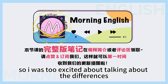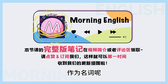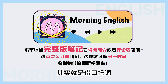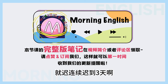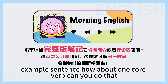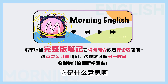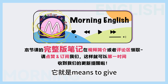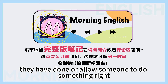I was so excited about talking about the differences, I forgot to ask if you know what the noun 'excuse' means. 那我当然得知道,对不对?作为名词呢,它是比较好理解的,其实就是借口、托词。Like, 'There's no excuse for being late three days in a row.' 就连续迟到三天,你是没有什么借口的,说不过去的。As for the verb, it means to forgive somebody for something that they have done, or to allow someone to do something.